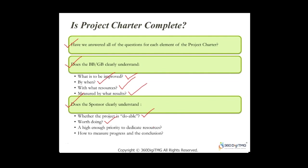First, define what the outputs are — the tangible things the process produces, like a report, a letter, or a mobile phone. Then define who your customers are — the people who receive your outputs. Every output should have a customer. Then look at the inputs — the things that trigger your process, often intangible, like a customer request. Every input should have a supplier. In some end-to-end processes, the supplier and customer may be the same person.